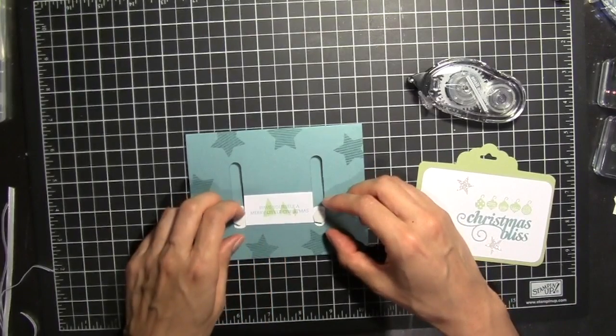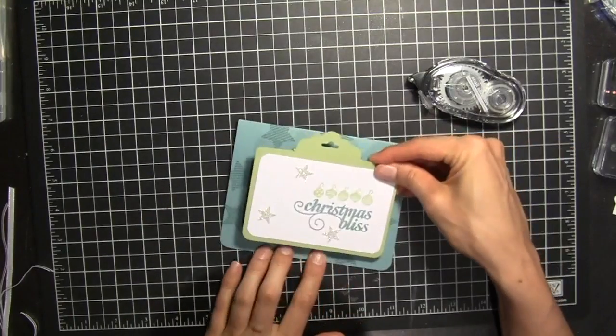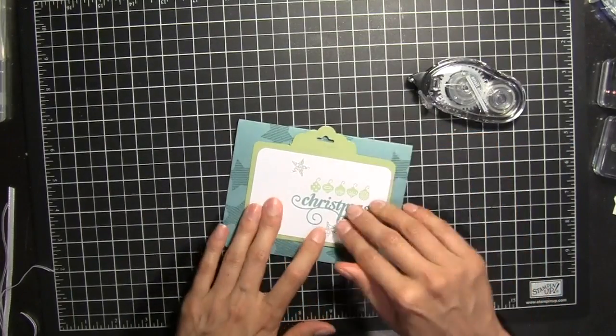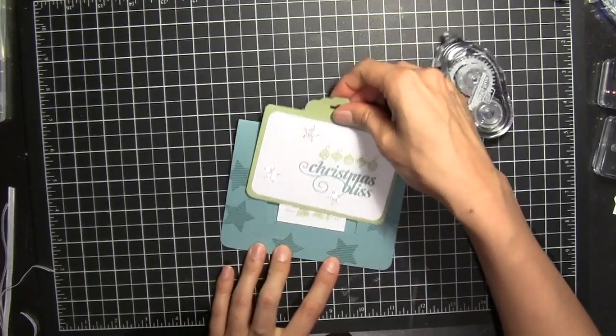And then we're going to make sure that they're level and even so that when it slides it's sliding smoothly. We're just going to place this in the middle and adhere that. And then now it slides.